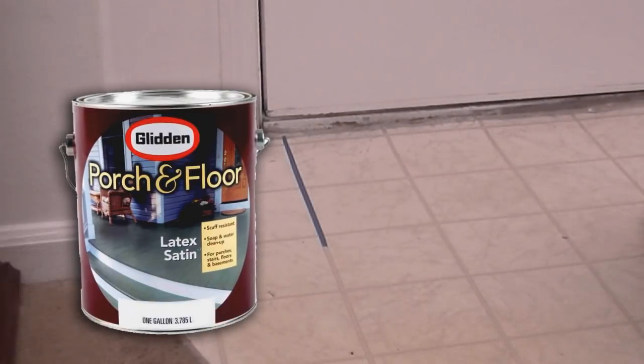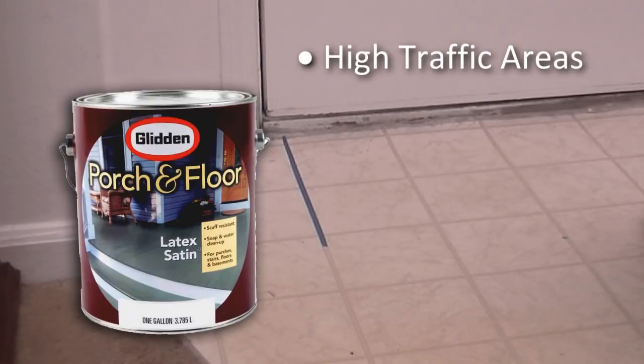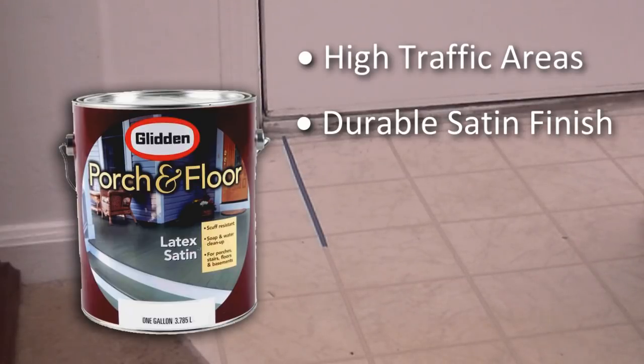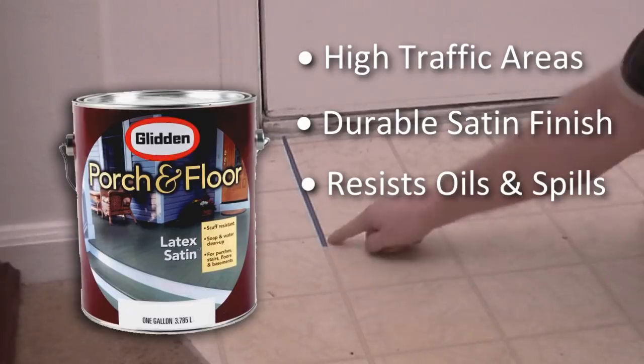I'll be using Glidden's Porch and Floor Paint with a satin finish. This paint is designed to withstand foot traffic, and add a decorative appeal with a durable satin finish. It also resists oil and spills.